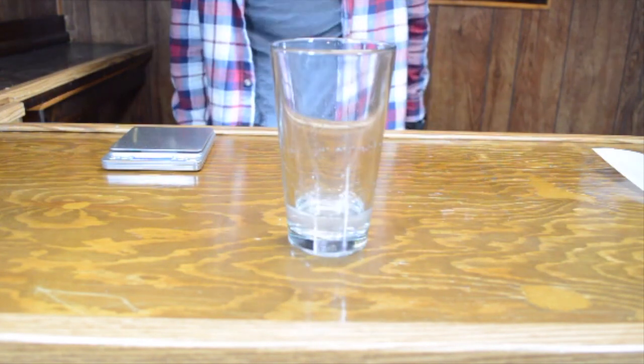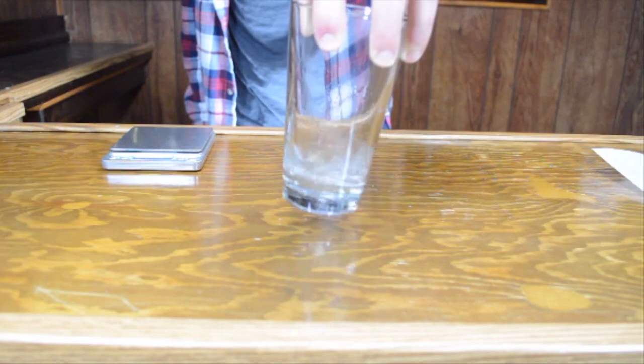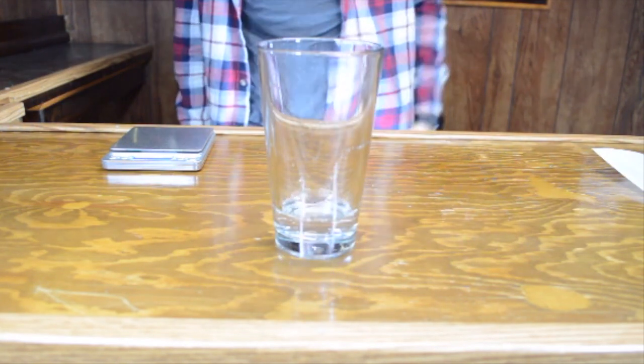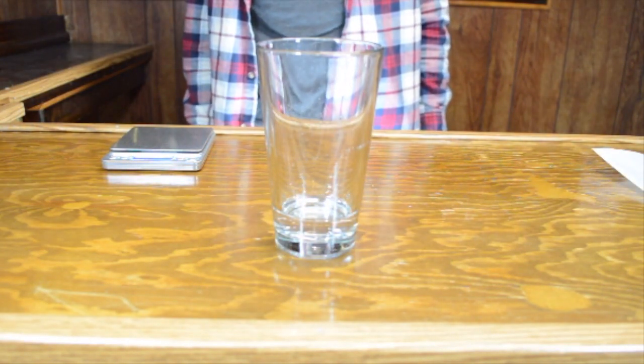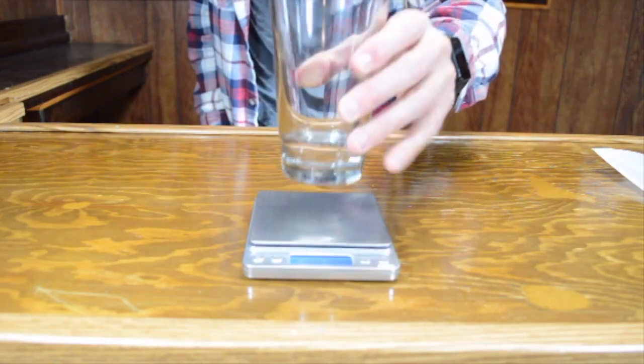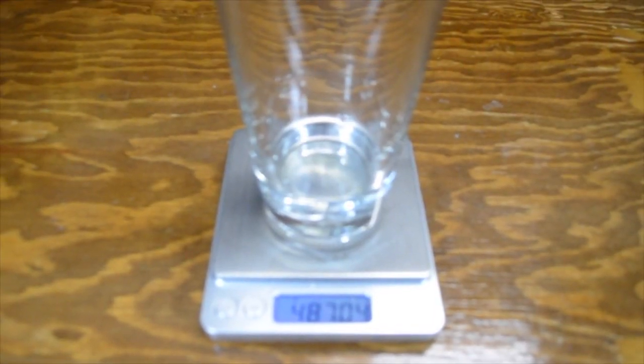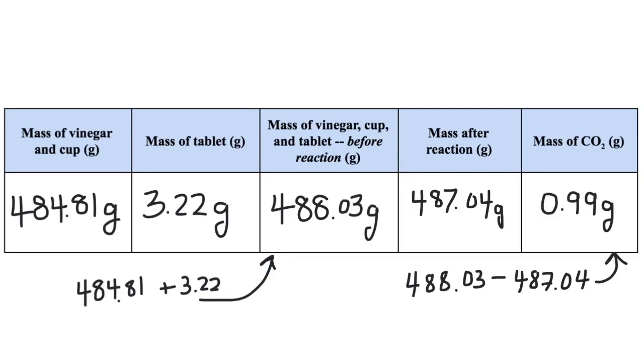Just make sure there's absolutely no bubbling left before moving to the next step. Put the cup on the balance and record the mass. Subtract this mass from the starting mass. The difference is the mass of CO2.